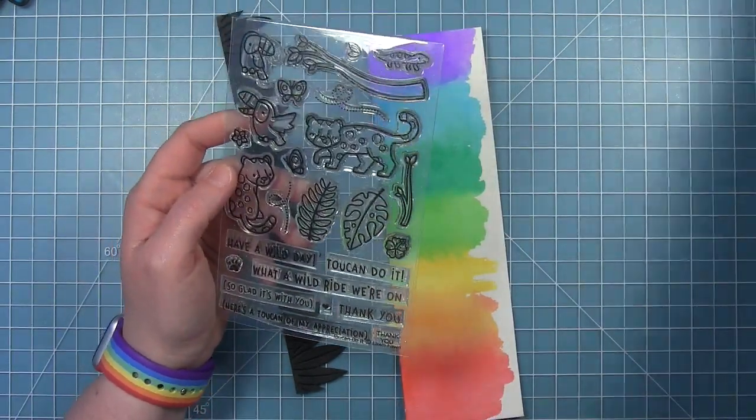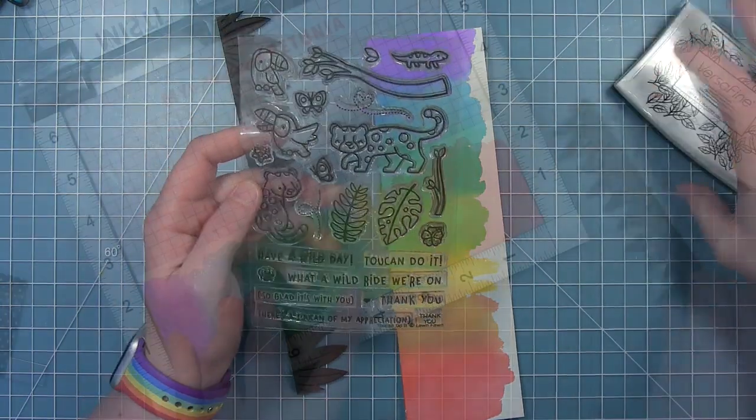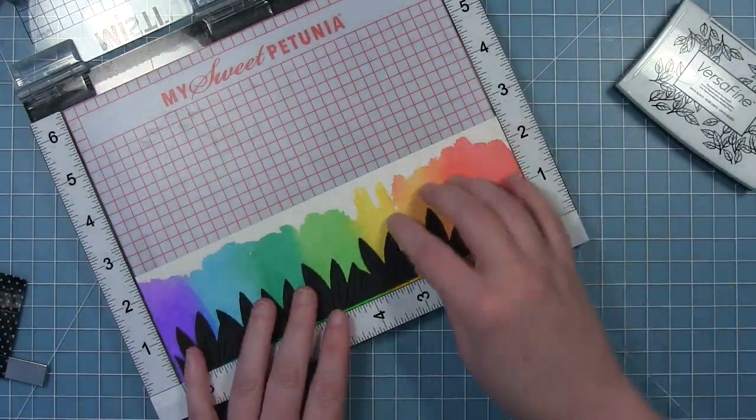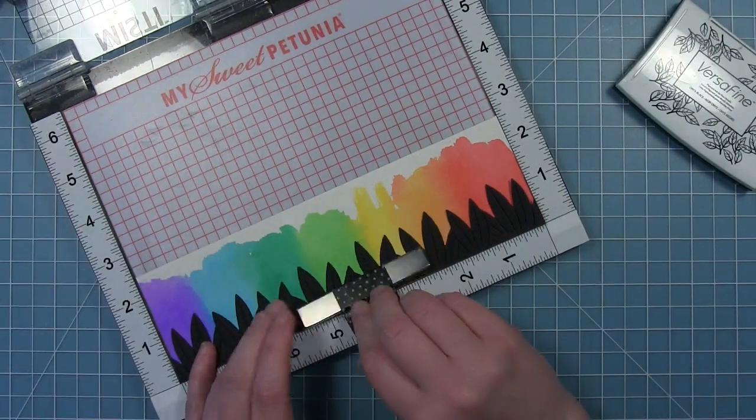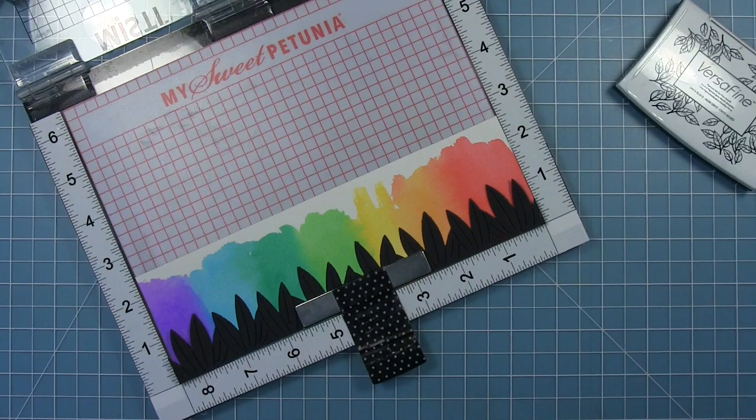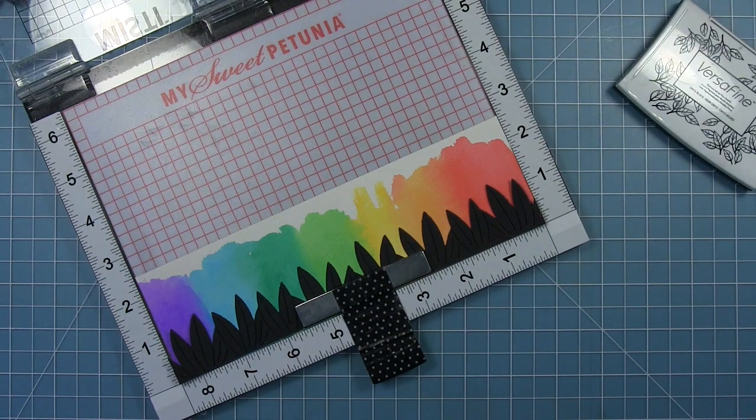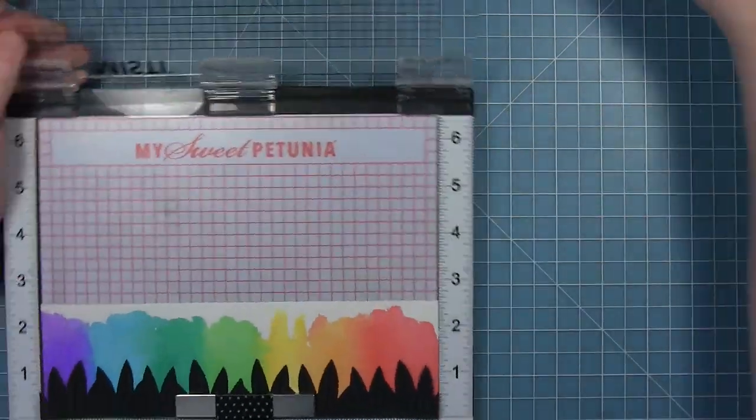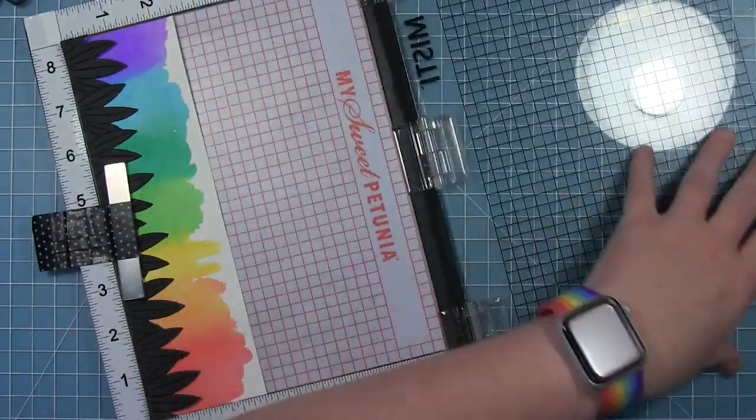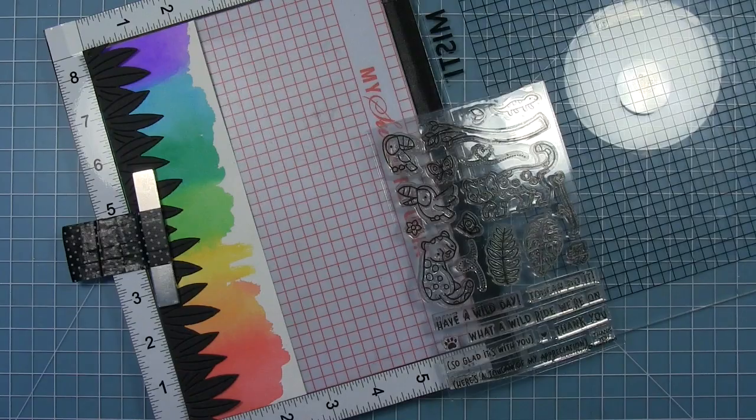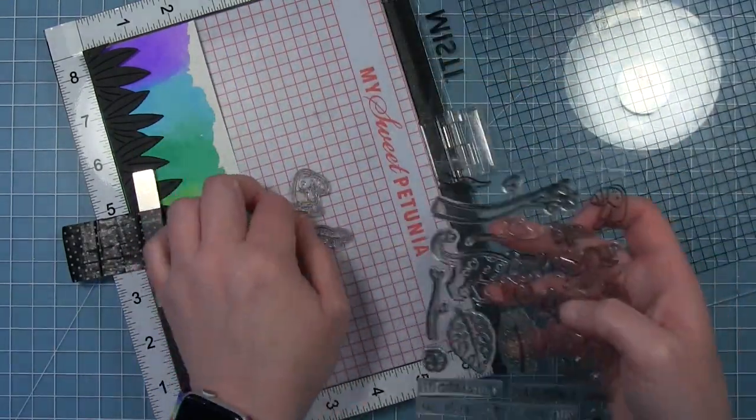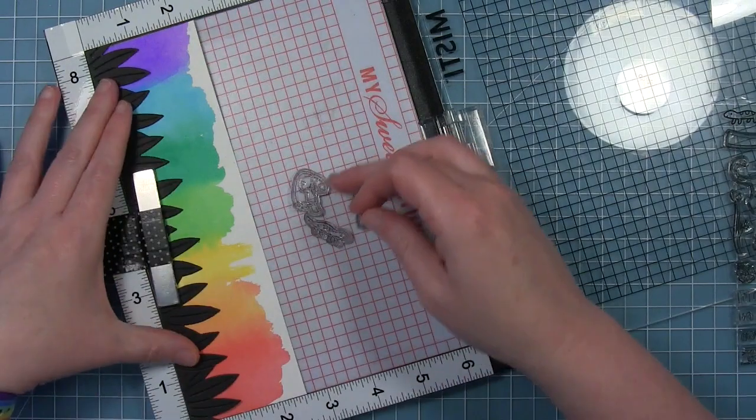I'm going to add some of the critters from Toucan Do It to this backdrop, but I don't want to color them. I just want to stamp them directly on there in black ink, so you just get their outlines and nothing takes away from this beautiful watercolor that I created. So I've just put those black leaves that I've die cut, put everything in my MISTI just as a placeholder so that I can place my stamps where I want them.